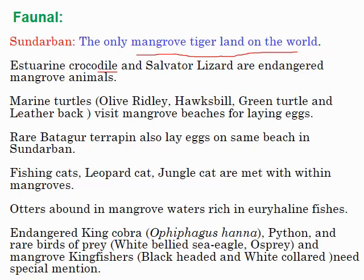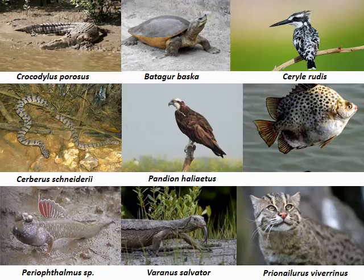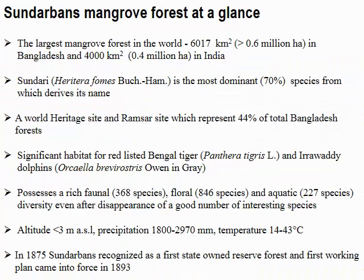Sundarbans is the only mangrove in the world where you can find the tiger. You can also find the Salvator lizard, the monitor lizard, many species of marine turtles including olive ridley, hawksbill, green turtle, and leatherback which come to lay eggs. The river terrapin Batagur baska is also found in the Sundarbans region. Fishing cat, leopard cat, and jungle cat are very prominent in the mangrove forest. There are also many estuarine fish species, cobra, king cobra, python, various birds of prey, and many varieties of kingfisher.